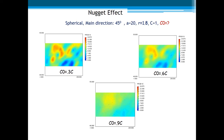If the nugget effect was equal to the sill, the resulting estimated values are all equal, no matter the location, which means that the arithmetic mean is the best estimate once there is no spatial structure.